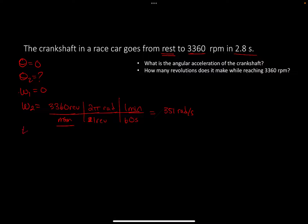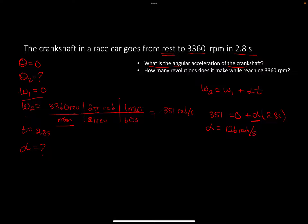Time equals 2.8 seconds, and the angular acceleration alpha is what they're asking for. Using the kinematic equation W2 = W1 + alpha times T, with W1 equal to zero, we get 351 = 0 + alpha times 2.8. Solving for alpha gives 126 radians per second squared. Note that's per second squared.